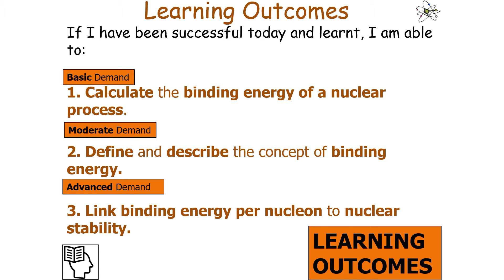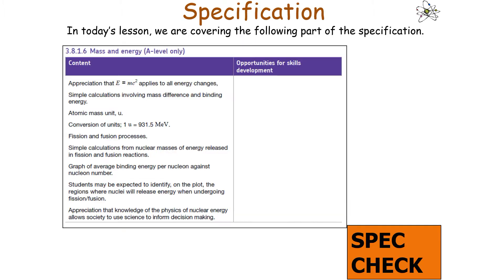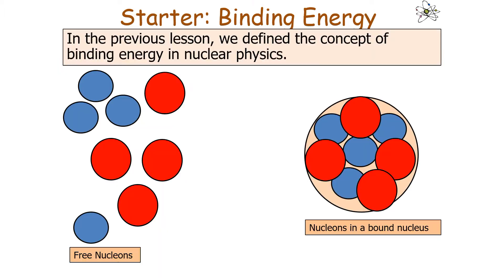We'll also link binding energy per nucleon to nuclear stability, which links into AQA A-level physics specification section 3.8.1.6, mass and energy.